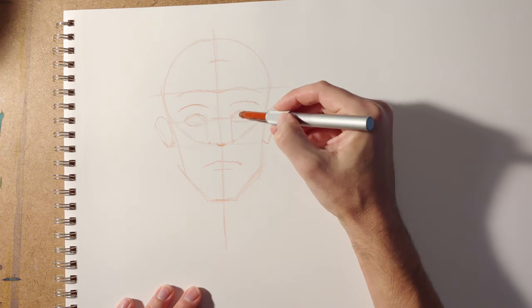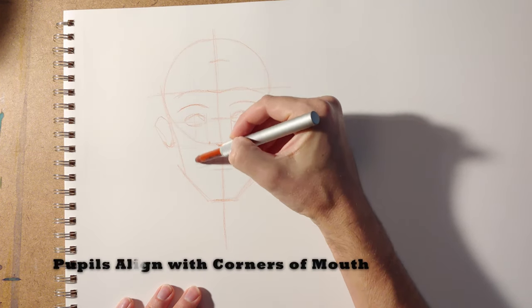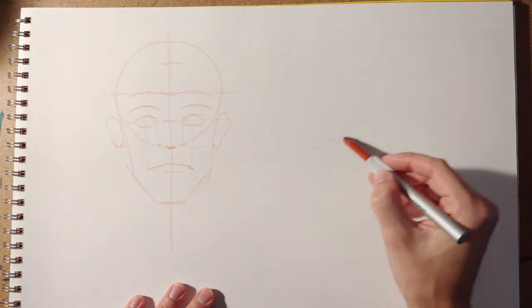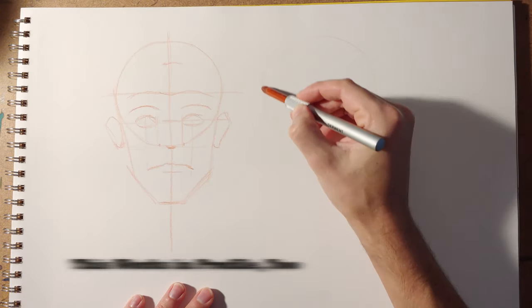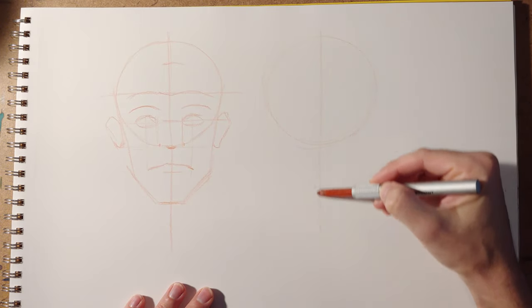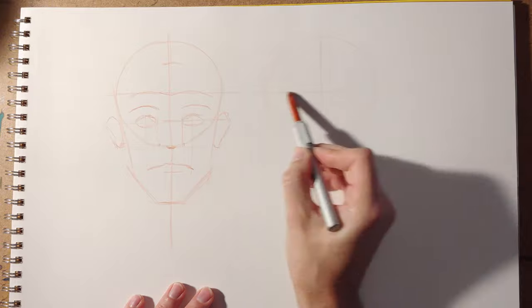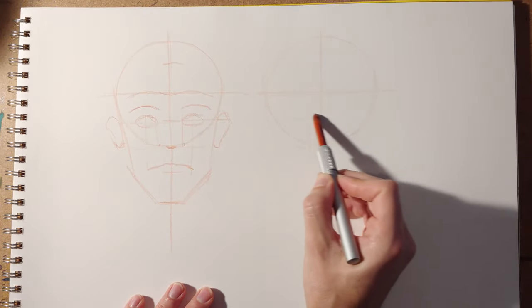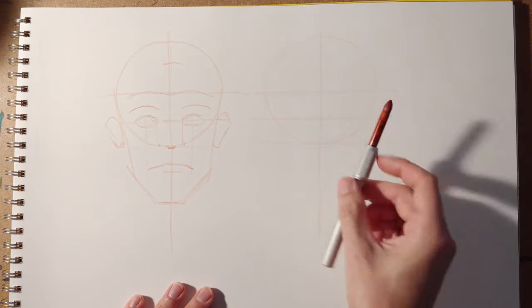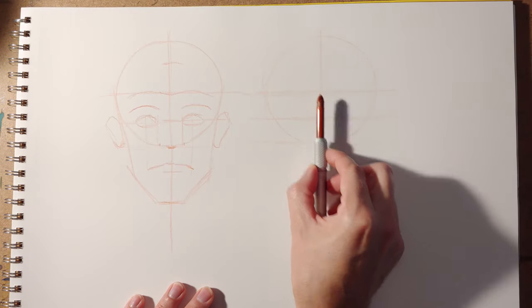The nose aligns vertically with the inside corner of the eyes, and the pupils line up with the corner of the mouth vertically, and that gives you a good head proportion. And what's cool about this method is that it's going to work in pretty much any orientation of the head. It might be a little more difficult if the head is tilting back or forward, but you can still use it. It works great in profile and three-quarter.